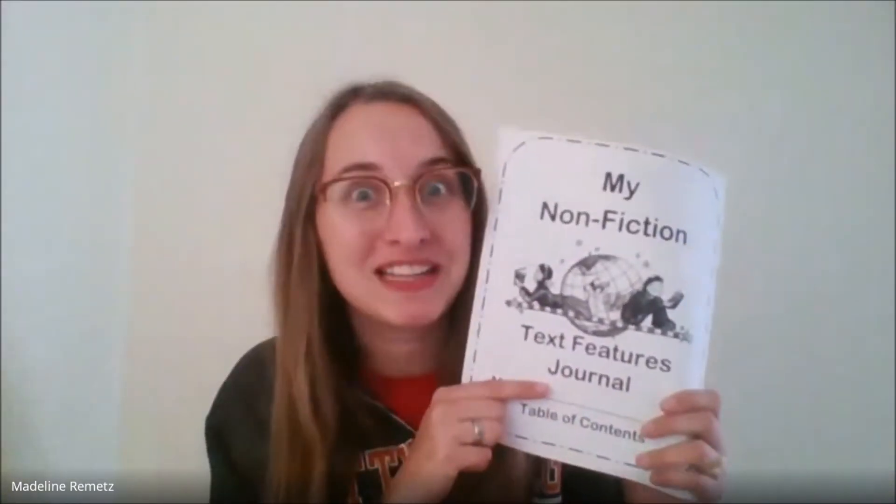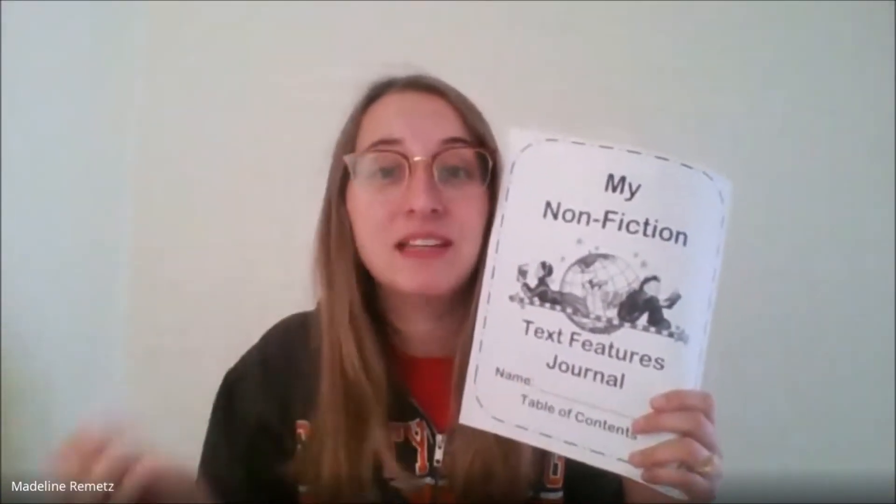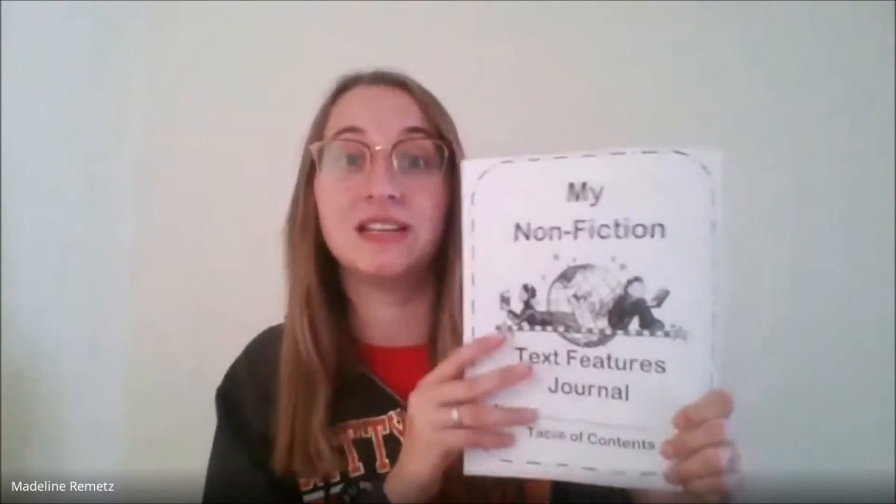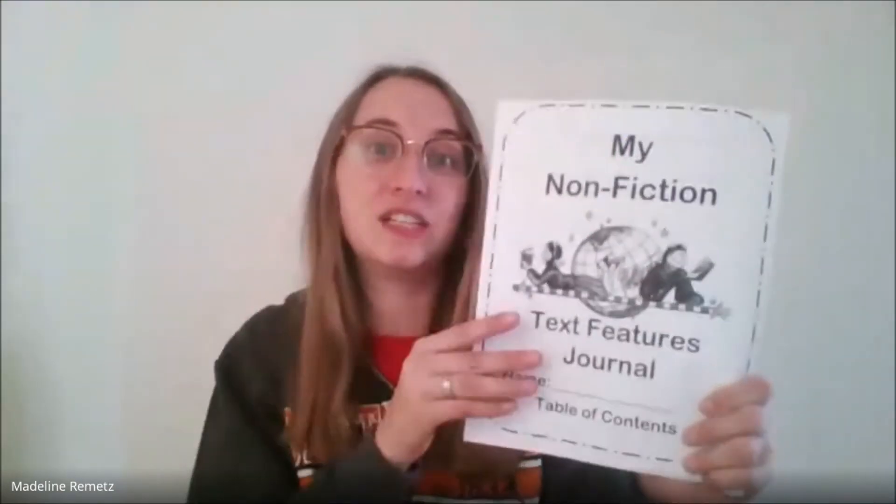A text feature is a fancy way to say something that shows up in a lot of these types of books. So a feature of maybe a fairy tale would be they always start with once upon a time. In this packet, you are going to be doing it this week, next week. We're going to be working in this packet and finding examples in the books we read — in real life or on the computer — these text features, things that show up in a bunch of nonfiction stories or nonfiction books.